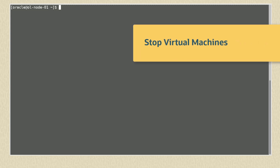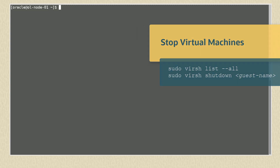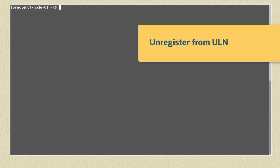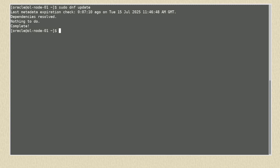Check if there are any virtual machines running with the command sudo virsh list --all. Any found to be running can be stopped with the command sudo virsh shutdown and inserting the name of the guest VM. If the system is registered with ULN, it must be unregistered. Always review the Leap documentation section called 'Preparing for the Upgrade' to see possible changes and settings needed for a successful upgrade. Make sure all system packages are up to date with the command sudo dnf update.